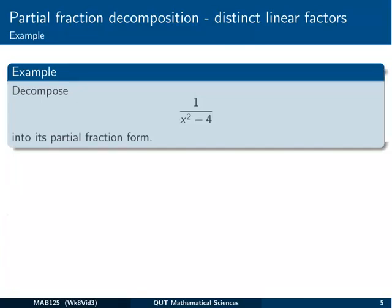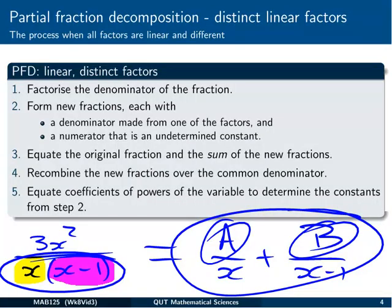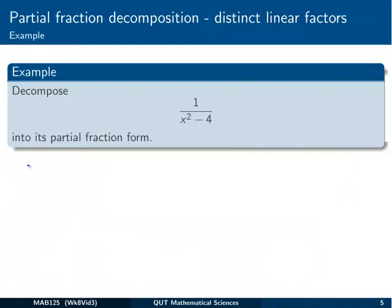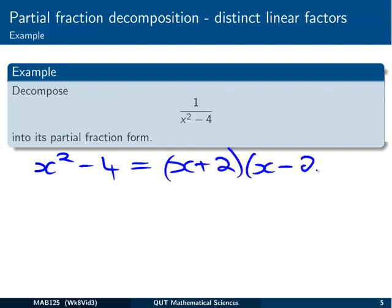So let's check it out with this example. Decompose 1/(x²-4) into its partial fraction form. So the first step is to factorize the denominator. On the denominator we've got x²-4. So that's a difference of two squares which we can write as (x+2)(x-2). So we've factorized it into a linear factor (x+2) and another linear factor (x-2).